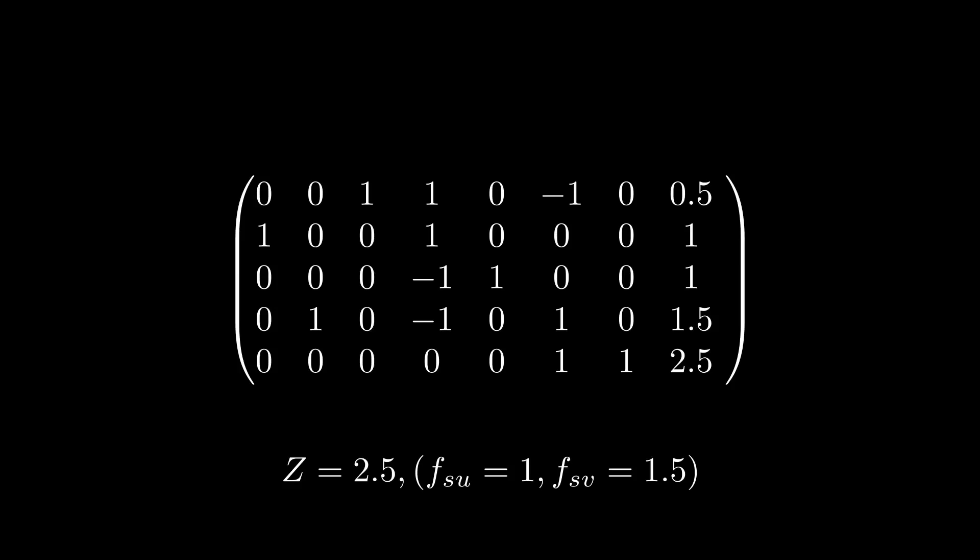To figure out the actual flow which yields this maximum, we simply look at the two leftmost columns, which correspond to our basic variables. Here, we can see that if we ignore all the artificial variables, we can set fsu to be 1 and fsv to be 1.5. Hence, we have that the solution to our LP is given as follows.